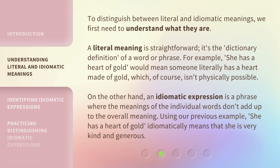To distinguish between literal and idiomatic meanings, we first need to understand what they are. A literal meaning is straightforward — it's the dictionary definition of a word or phrase. For example, "she has a heart of gold" would mean someone literally has a heart made of gold, which, of course, isn't physically possible.